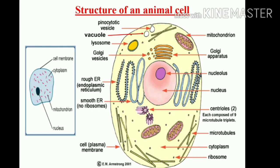If you compare the vacuoles, compared with the plant cell, in animal cell the vacuoles are small. Lysosomes are there — they are also known as the suicide bag. Golgi vesicles are present. If we consider the endoplasmic reticulum, there is a rough endoplasmic reticulum and a smooth endoplasmic reticulum. In rough endoplasmic reticulum, there are some nodes present. In smooth endoplasmic reticulum, there are no such nodes.